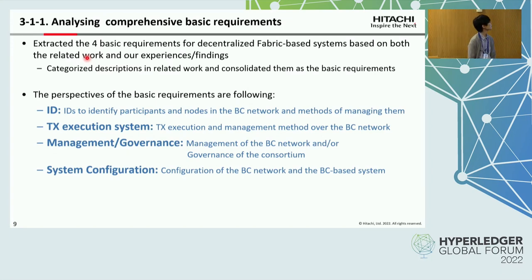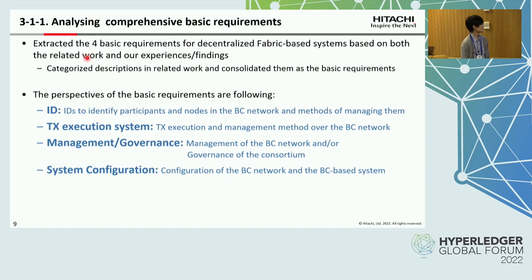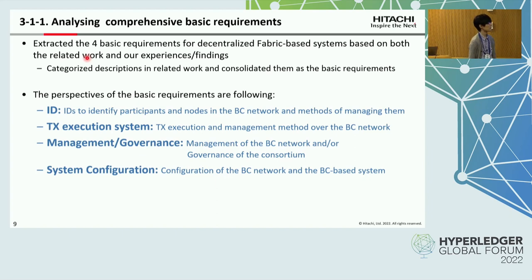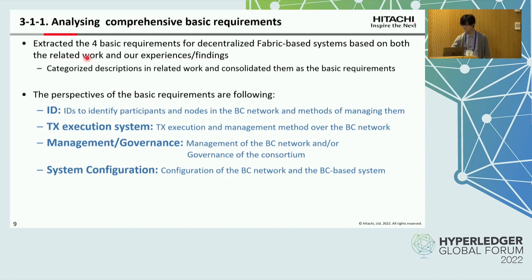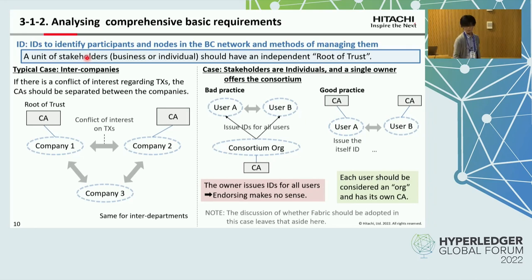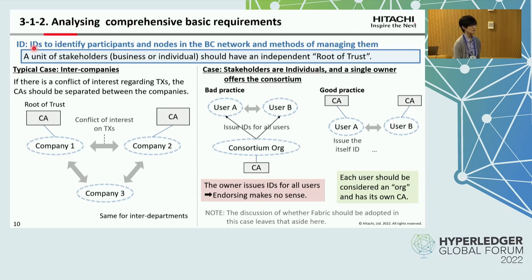We extracted four basic requirements for decentralized fabric-based systems based on both related work and our experience and findings. We categorized statements and important descriptions in related work and consolidated them as basic requirements. The perspectives of the basic requirements are the following. I will explain each perspective one by one. The first perspective is ID — identity.